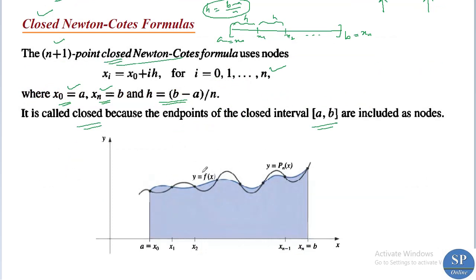Here, our original function is y = f(x). This is our original function, and this is the nth Lagrange polynomial shown as the dark blue shaded curve — y = f_n(x), the nth Lagrange polynomial. We are subdividing our interval [a, b] into n equal parts: a, x_1, x_2, etc., and corresponding points give us the Lagrange polynomial.